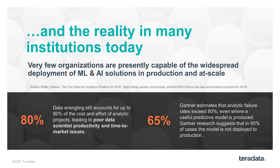The second point Gartner makes is that only 65% of models are actually deployed in production. Without that production deployment, you're not getting the value from all the work that's been done. When we look at our Analytics 1-2-3 strategy, we're really focusing on these two areas: access to good quality data and reuse of data, and also a clear route to production.